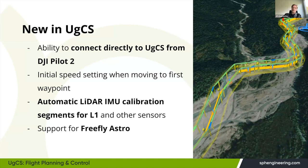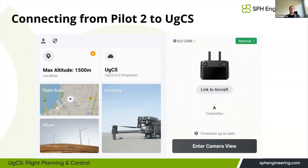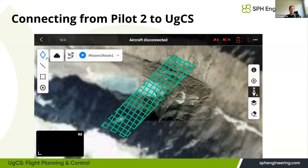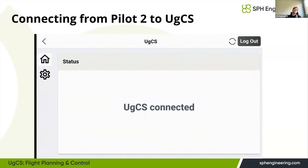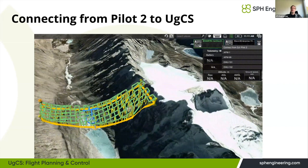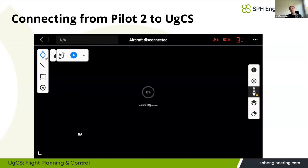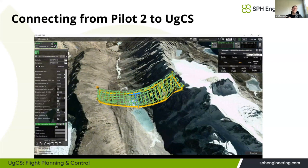We also added official support for the Freefly Astro drone in 4.16. To connect via DJI Pilot 2, you find the IP address of your computer within UgCS by pressing 'Connect DJI Pilot 2', then on the same network you input that address into DJI Pilot 2. It automatically connects, showing drone telemetry on the map. In Pilot 2, you can see all your planned routes in the Cloud tab.